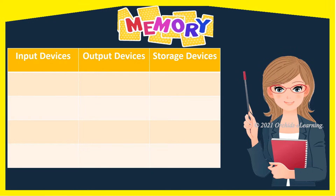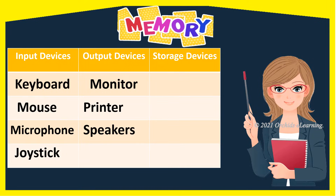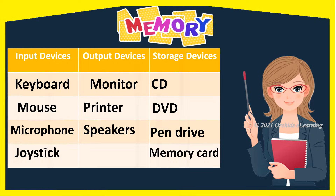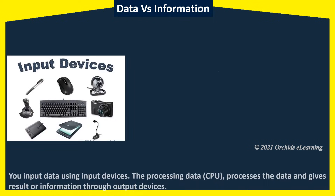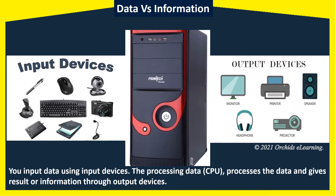Let me test your memory. You have already learned about input, output, and storage devices in your previous grades. Can you name these devices? Input devices are keyboard, mouse, microphone, and joystick. Output devices are monitor, printer, and speakers. And storage devices are CD, DVD, pen drive, and memory card. You input data using input devices; the CPU processes the data and gives results or information through output devices.